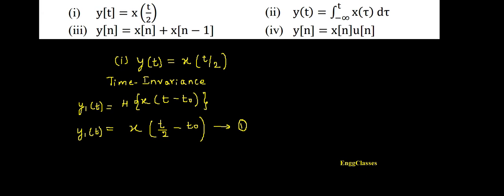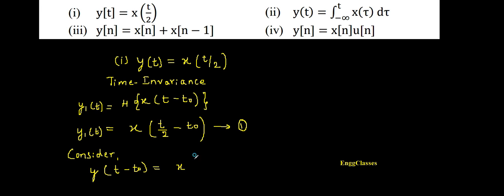Now let me consider a shift in the output. Output is y(t), so a shift in the output is y(t - t₀). That equals x of t/2, which is the nature of the system, but now t is replaced with t - t₀. So wherever we find t, it is replaced with t - t₀, giving x((t - t₀)/2). I call this equation number two.